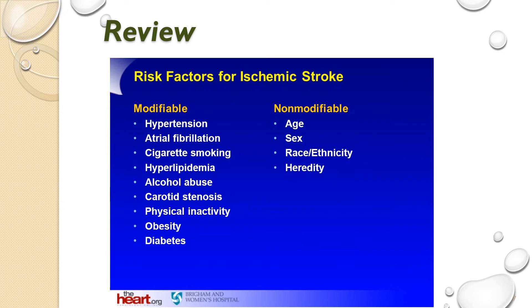Non-modifiable risk factors include things you can't change: your age, your sex or DNA, your race and ethnicity, and heredity. You can't change your genome at this point — though who knows, give it another hundred years or so. There are patients at higher risk simply because of family history.